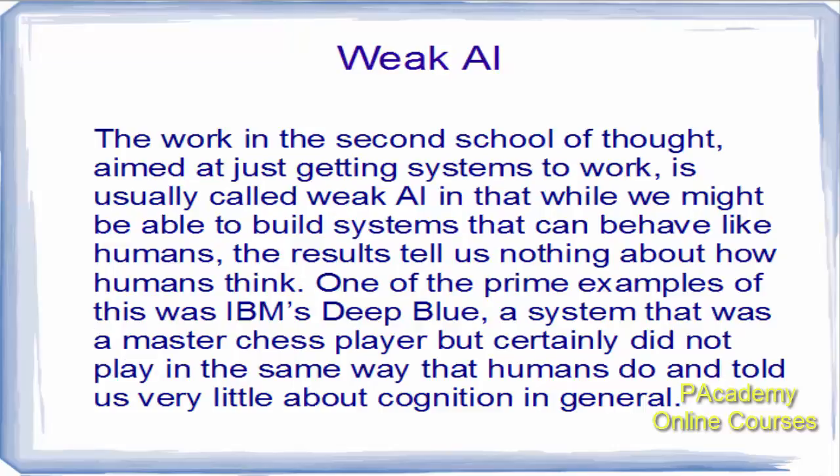Next is weak AI. Work aimed at just getting systems to work is called weak AI — while we might build systems that can behave like humans, the result tells us nothing about how humans think. One prime example was IBM's Deep Blue, a system that was a master chess player but certainly did not play the same way humans do and told us very little about cognition in general. Weak AI builds systems that can perform a given function like playing chess very well, without revealing much about the whole human brain.